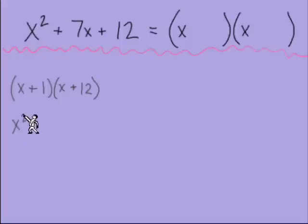So let's do FOIL method. The first x times x is x squared. We've got for the outer x times 12 is 12x and inner is 1x. And then we have last is a positive 12. Combine those like terms and we've got x squared plus 13x plus 12. So it's not the 7 we were looking for.